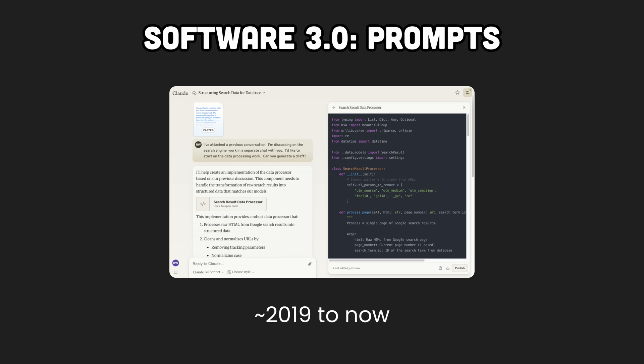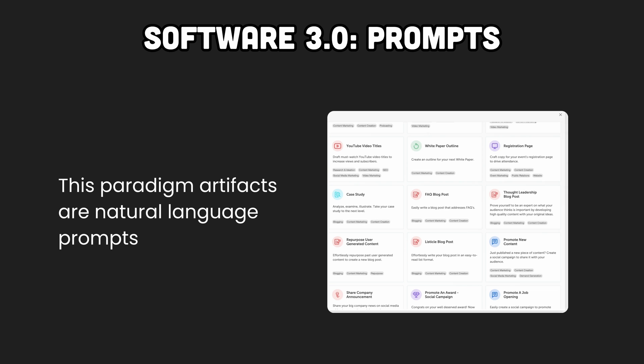Software 3.0 involves prompts working as programs to control programmable LLMs, approximately since 2019. In this paradigm, you don't have to train the model to achieve a specific task. You can write a program in English, call the prompt, and give it as input to an LLM. For example, you can ask an LLM to extract dates from a piece of unstructured text. These paradigm artifacts are natural language prompts, and your performance is now determined by the quality of your prompts and how you craft the LLM context.